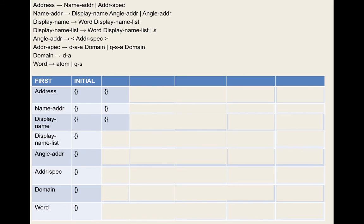To clarify: rule two says take the first set of the first symbol, subtract epsilon, then add that result to the target first set. Rules three and four also always subtract epsilon, and then rule five says if all symbols on the right-hand side have epsilon in their first sets, then you add epsilon. There's nothing special about epsilon itself.